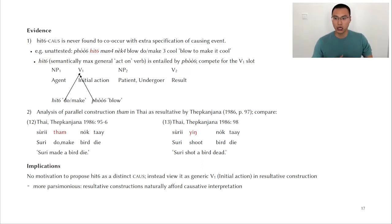For example, we don't see an example like pɔ̀ hít mɯ̀ nɛ̀k ʔɔ̀n, blow to make it cool. How do we explain that? Well, I think what's happening is that hít do and make and pɔ̀ to blow are semantically similar. hít is entailed by blow. If you blow, you're actively doing something to it. So these two verbs compete for the same V1 slot, for the initial action slot, so only one of them is acceptable. That's why I don't find examples of pɔ̀ hít mɯ̀ nɛ̀k ʔɔ̀n in my corpus. And another piece of evidence is how the parallel construction using tam in Thai has been analyzed as a resultative by Thepkanjana. So these are two examples of hers. Suri do make bird die and Suri shot a bird dead. So she claimed that these are instances of the same type. So the implication is that there is actually no motivation to propose hít as a distinctive causative marker in Saek. And instead, we should just view it as a generic V1, which denotes initial action in a resultative construction. And this is more parsimonious because a resultative construction naturally affords this causative interpretation.